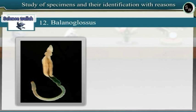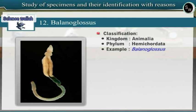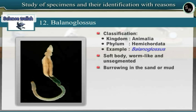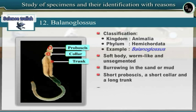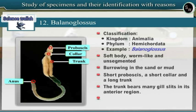Specimen 12: Balanoglossus. Observe the specimen of Balanoglossus. Balanoglossus belongs to phylum Hemichordata in Kingdom Animalia. Since Balanoglossus has characters such as division of body into proboscis, collar and trunk, it is included under phylum Hemichordata. It has a soft, worm-like and unsegmented body, seen burrowing in sand or mud. The body is divisible into a short proboscis, a short collar and a long trunk. The trunk bears many gill slits in its anterior region. Balanoglossus occupies a systematic position between non-chordates and chordates.